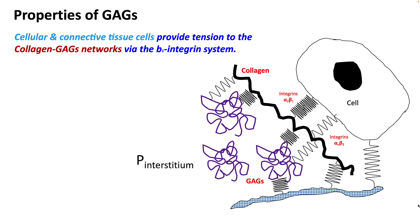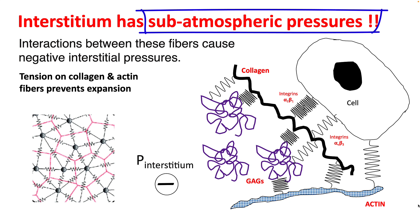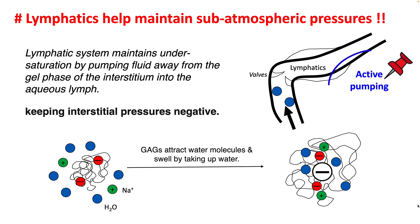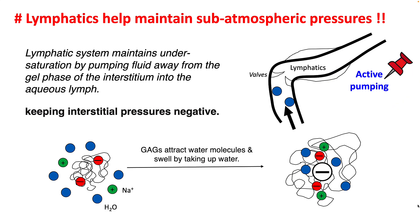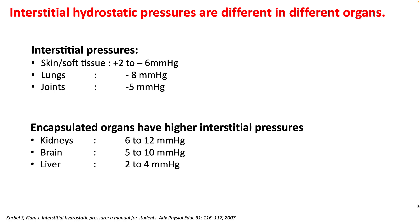The glycosaminoglycans, collagen, and cellular structures are integrated via a network of the beta-1 integrin system. These interactions cause negative interstitial pressure — so the interstitium has sub-atmospheric pressures. Lymphatics maintain this sub-atmospheric pressure by actively pumping water out of the interstitium, keeping interstitial pressure negative and glycosaminoglycans under-hydrated. Interstitial hydrostatic pressures differ between organs: while negative in most organs, encapsulated organs have positive interstitial pressures. Patients with burns have much more negative interstitial pressure, while tumors have highly positive interstitial pressures.